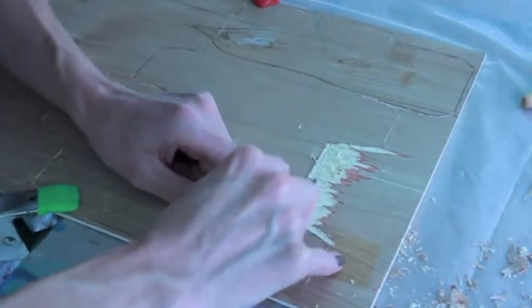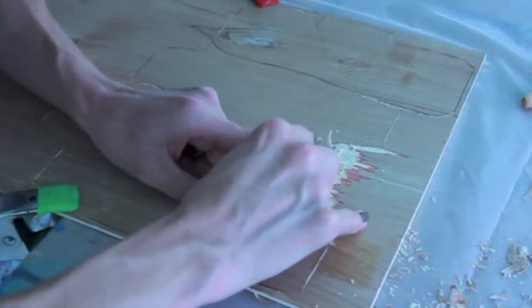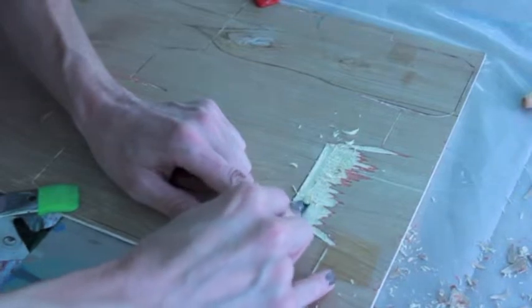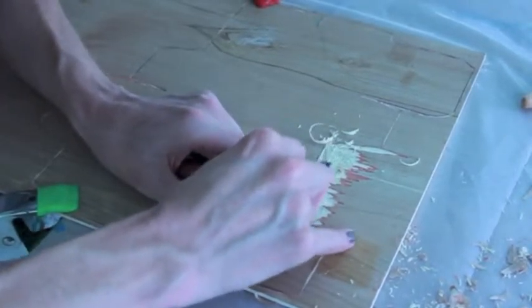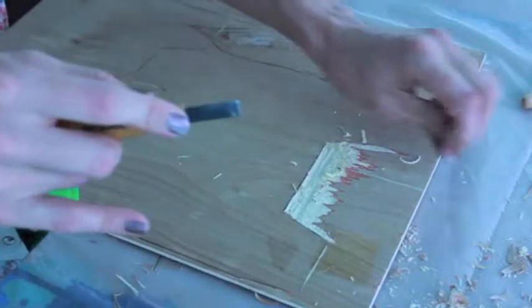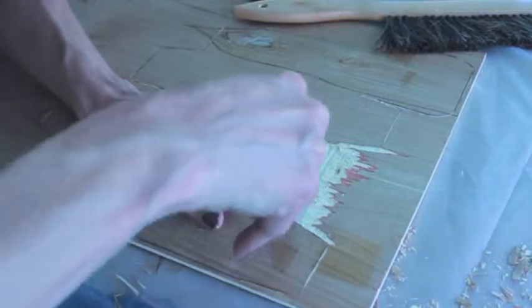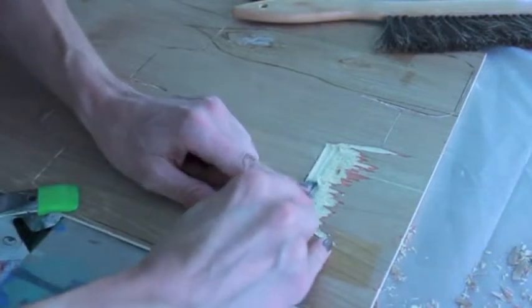This is just what they call door skin or lauan and it's real cheap. And you can actually find pieces with very beautiful top veneers that have great grain to them. So the economic aspect of making these prints is quite inexpensive.